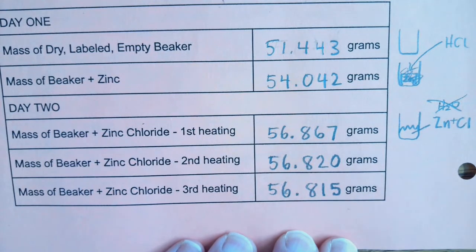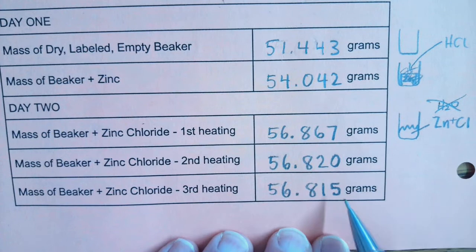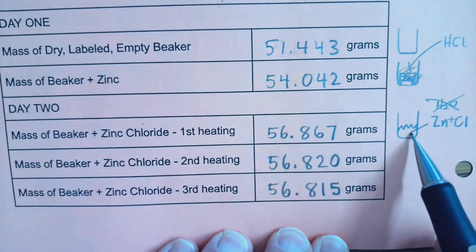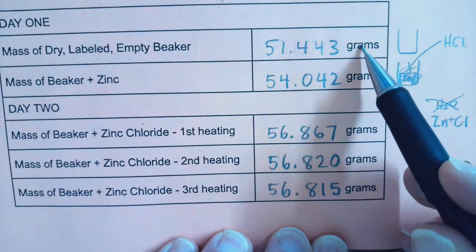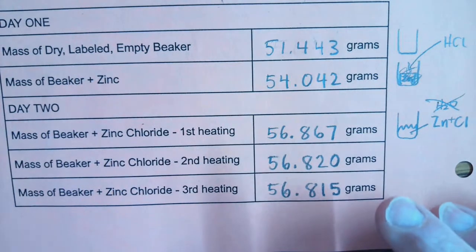So again, if I want to know my zinc chloride product, I want to take the mass of the beaker including the product and subtract out the empty beaker mass. Let's do that.